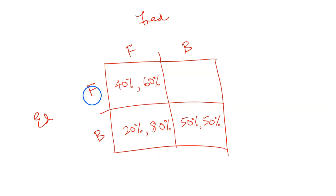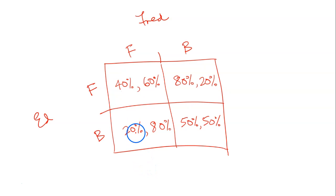On the other hand, if I was playing forehand and he was playing backhand, then there's an 80% chance I'd win and a 20% chance he'd win. So these are all the different combinations.